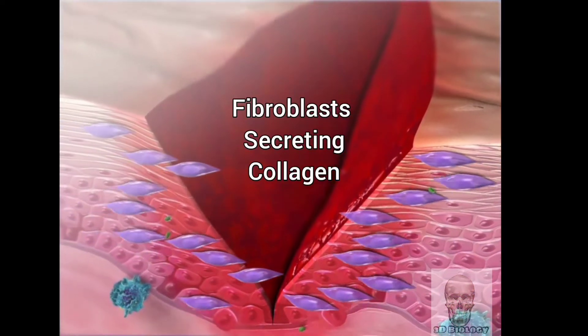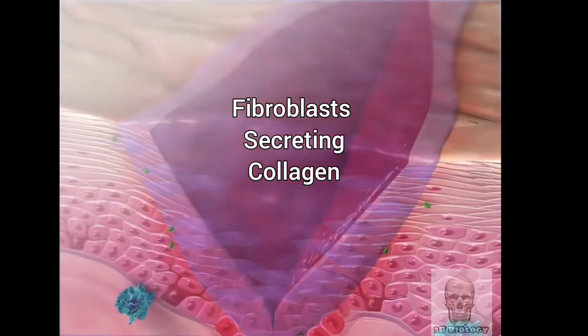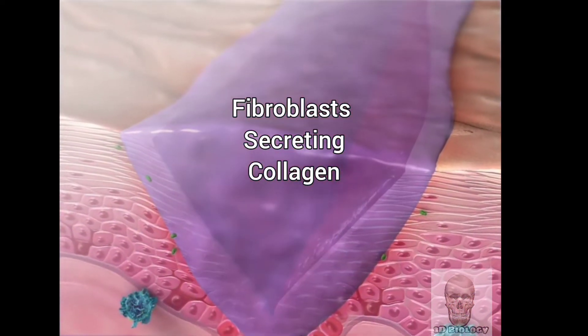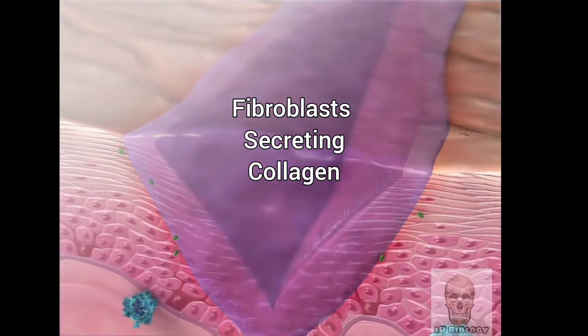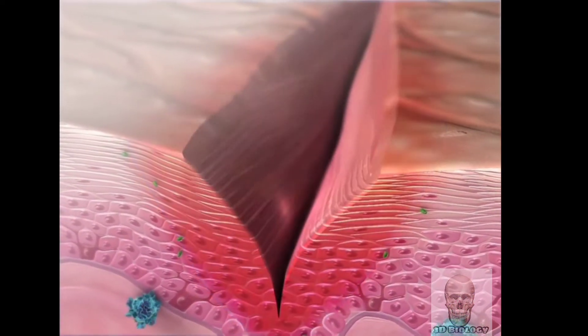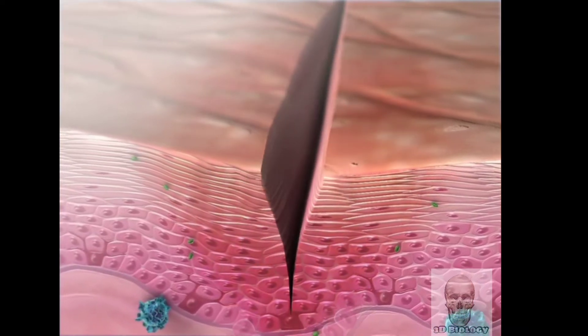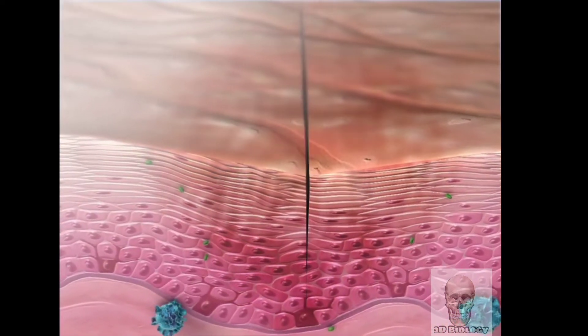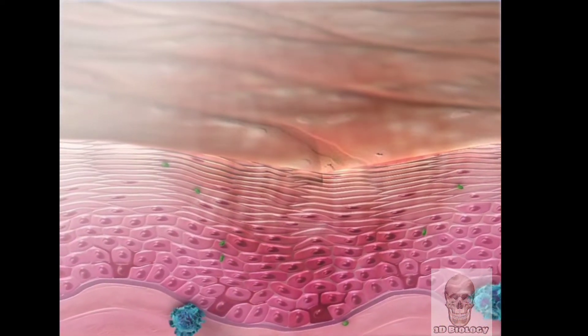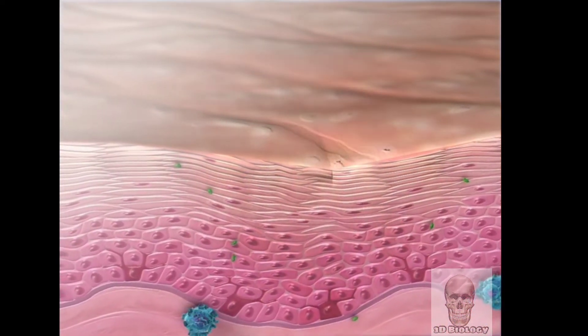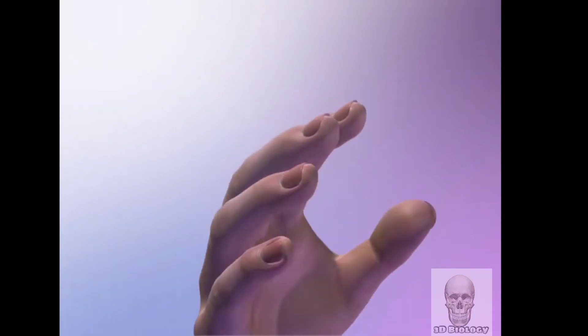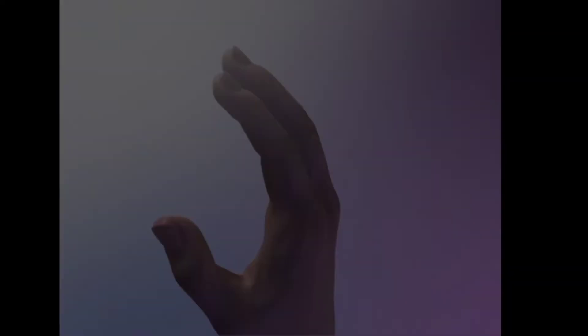Fibroblasts build new tissue by secreting collagen that takes the shape of the original tissue. During remodeling, the final phase of wound healing is completed, and the tissue is repaired.